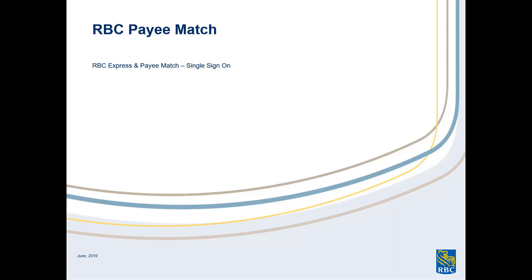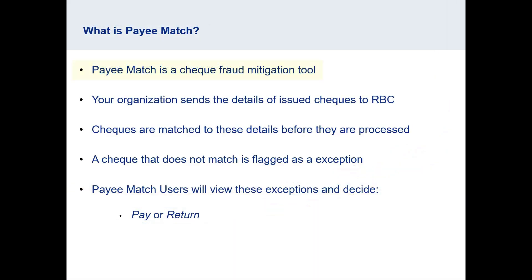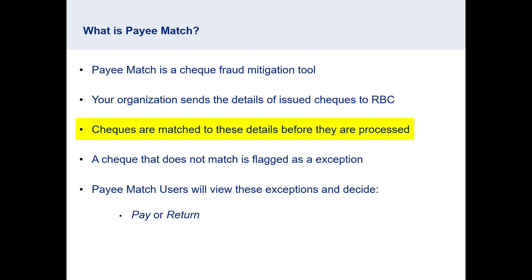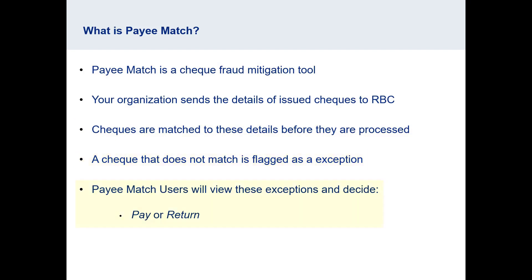Hello, and thank you for joining me today to learn about RBC Payee Match. In this video, we will demonstrate how to give a user access to Payee Match. Payee Match is a check fraud mitigation tool. Your organization will send the details of issued checks to RBC. The checks presented against your account are matched to these details before they are processed. If a check does not match the details, it is flagged as an exception. Payee Match users will view these exceptions and decide whether to pay or return that check.